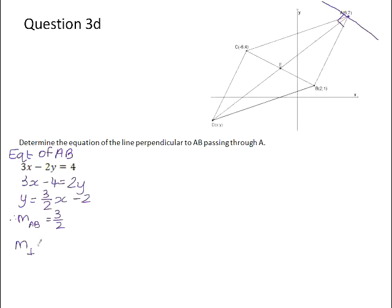Now, because the lines are perpendicular, we know that the gradient of the perpendicular line multiplied by the gradient of AB will be negative 1.